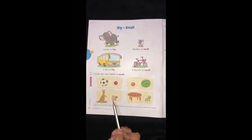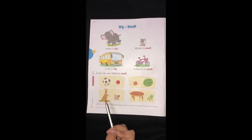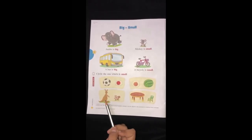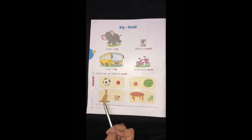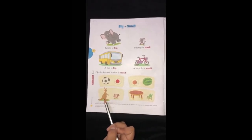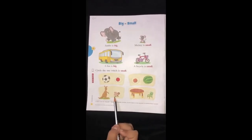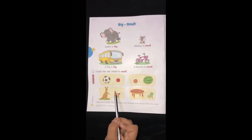Wow! There are two animals, a kangaroo and a squirrel. Which animal is small? A kangaroo is small? No, no, no. A kangaroo is big in size and a squirrel is small in size. So let's circle the small animal.